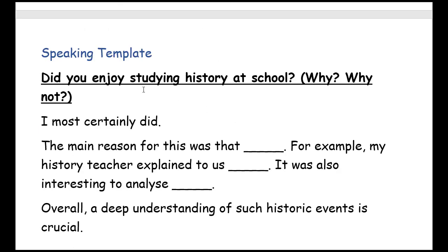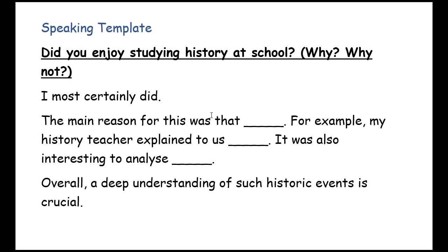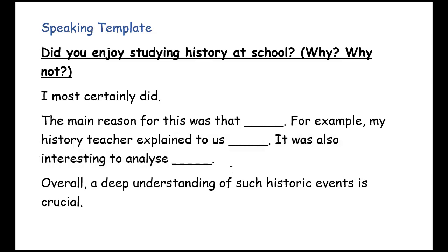Now let's move to the next question: 'Did you enjoy studying history? Why or why not?' You should start with 'I most certainly did,' which means 'of course I did.' Then say 'The main reason for this was that...' and provide one specific reason why you enjoyed studying history. Next, say 'For example, my history teacher explained to us...' and explain a fascinating aspect you studied. Follow with 'It was also interesting to analyze...' to give one more interesting idea. Conclude with 'Overall, a deep understanding of such historic events is crucial.'